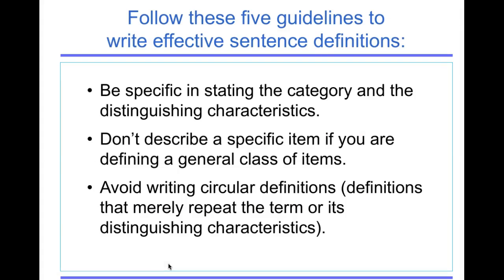These are five guidelines for writing effective sentence definitions. Be specific in stating the category and the distinguishing characteristics. Don't describe an item if you are defining a general class of items, so don't be specific if you're talking about the big picture.